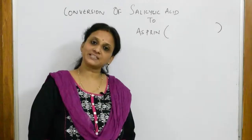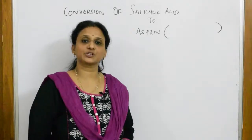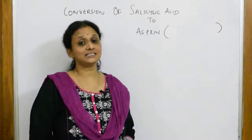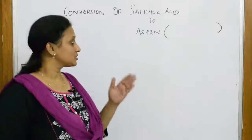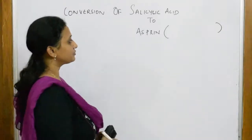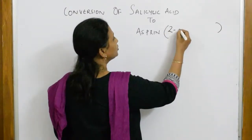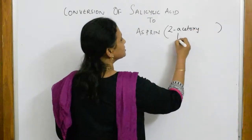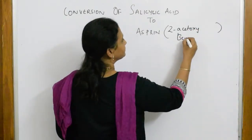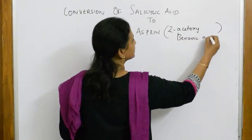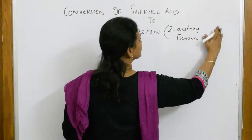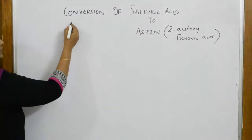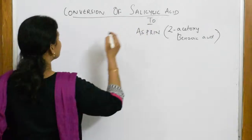We've already prepared salicylic acid using Kolbe's reaction. Now let us see how to convert salicylic acid into aspirin. The other name given for aspirin is 2-acetoxy benzoic acid. Let us see how this is formed.